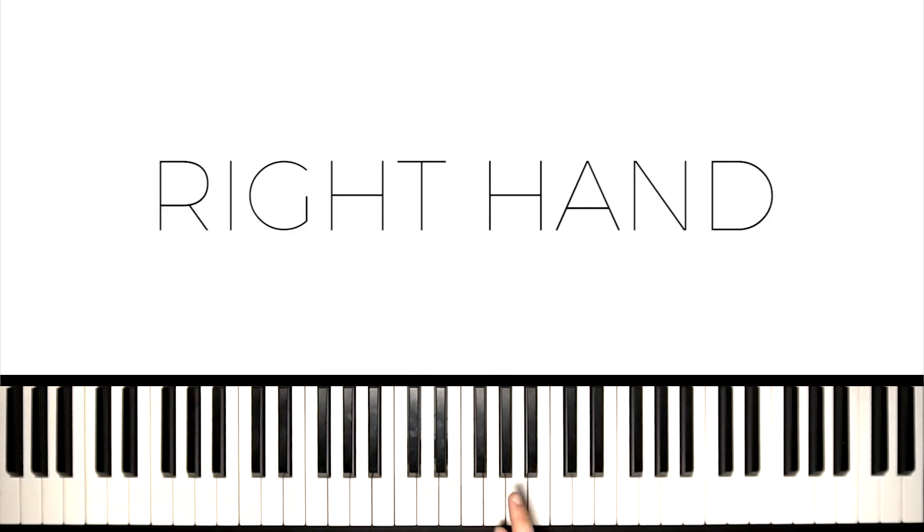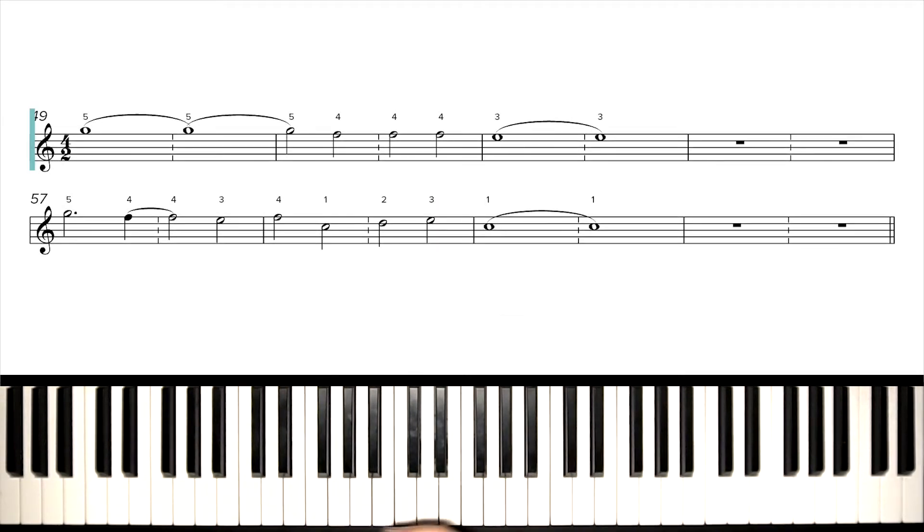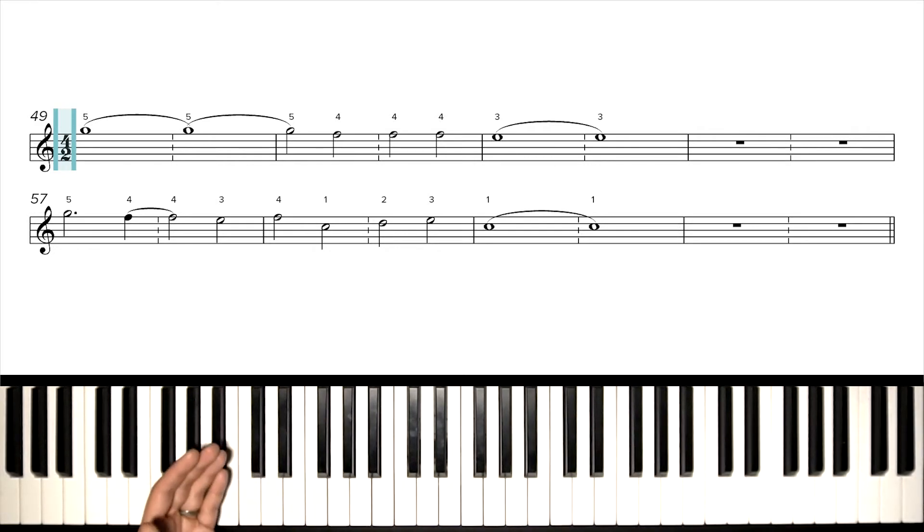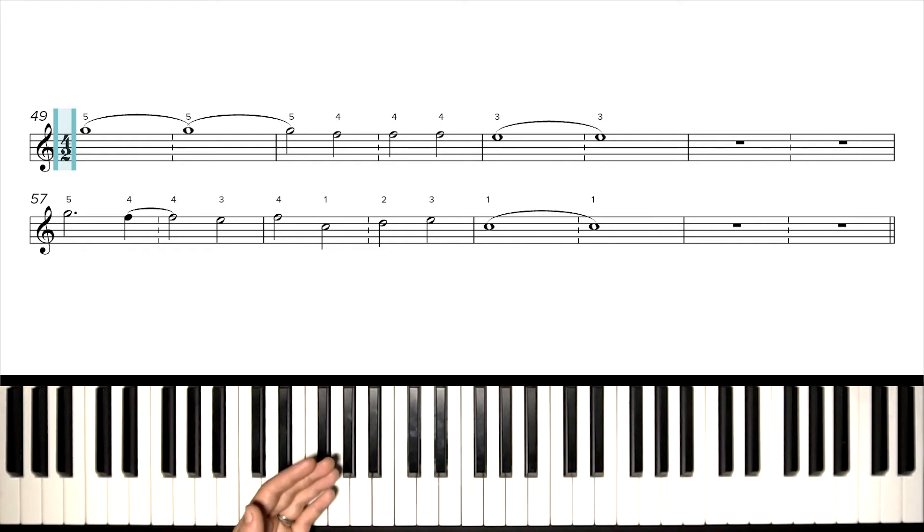All right, let's jump in with the right-hand melody first. Our key signature, zero sharps, zero flats. For this arrangement, we're in the key of C major. Time signature is 4-2. This is basically a 4-4, but we've stretched the rhythms out about double time. It makes them easier to see, easier to digest, easier to read in the notation. But this is essentially a half-time feel for 4-4.